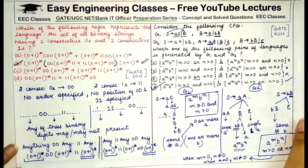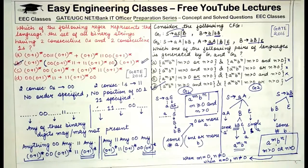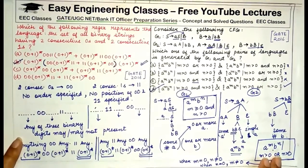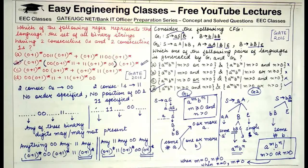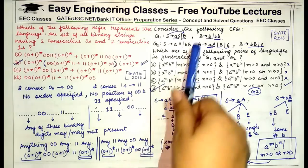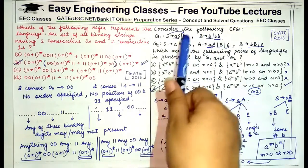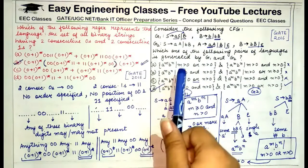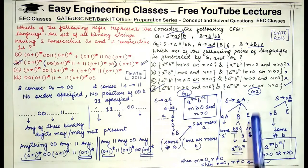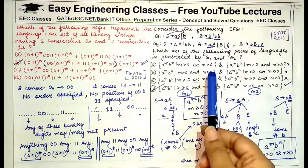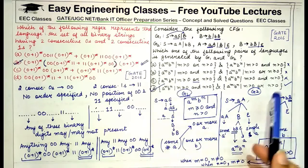The second grammar was a little tricky, but by writing down all possible productions and combinations, you can find the language it generates. In such questions, it is preferred to identify the language of one grammar, eliminate certain options, and then determine which remaining option matches the second grammar's language.